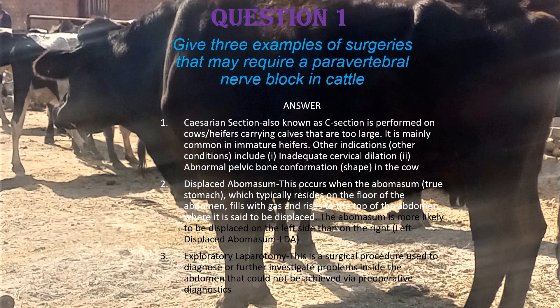The third surgery requiring a paravertebral nerve block is exploratory laparotomy, a surgical procedure used to diagnose or investigate problems inside the abdomen that could not be achieved via pre-operative diagnostics. Those are the three examples of surgeries that may require a paravertebral nerve block in cattle.